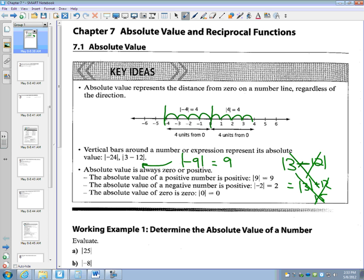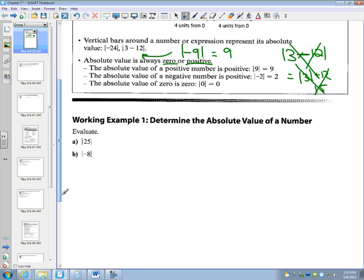You have to treat it like brackets. It's always zero or positive. The absolute value of a positive number is positive. The absolute value of a negative number is positive. And if you get zero, the absolute value of zero is zero.